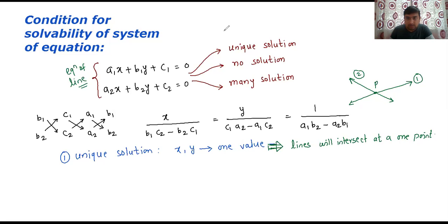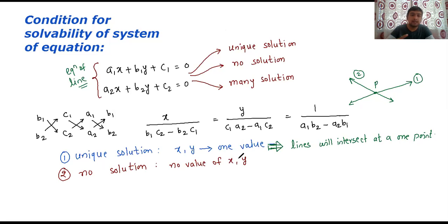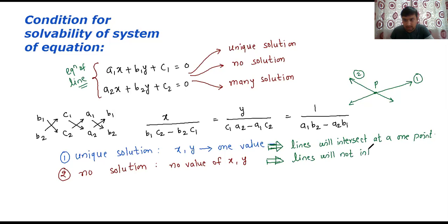Suppose a system of linear equations has no solution. No solution means there is no value of x and y which will satisfy the given system of equations. Now, what is the geometrical meaning of this? The geometrical meaning is that the lines will not intersect. They will not intersect each other — your lines will be like this, not going to intersect each other.